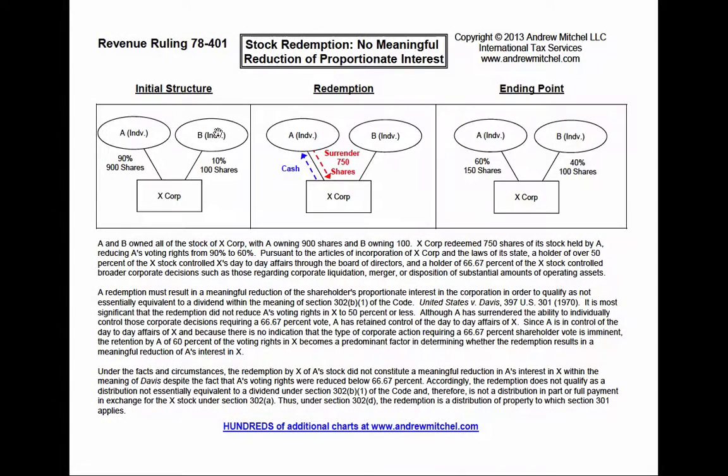Individual A and Individual B owned 100% of Corp X. A owned 900 shares representing 90% and B owned 100 shares representing 10%. Corp X redeemed 750 of its shares held by A in exchange for cash. So A surrendered 750 shares.